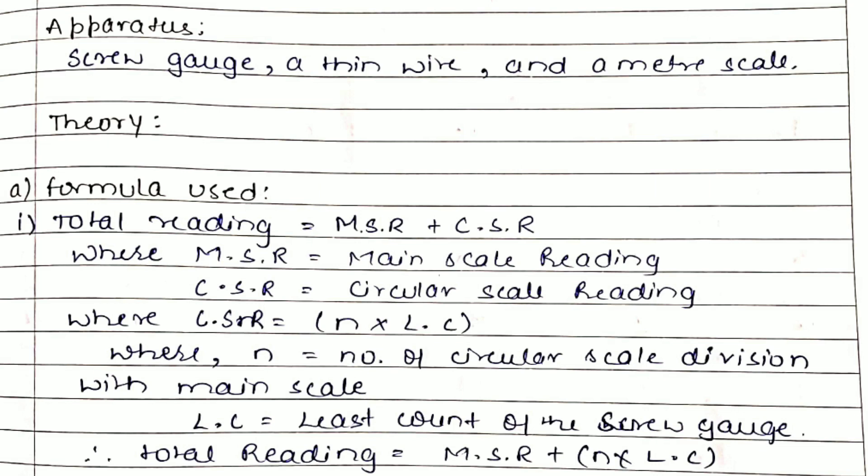In this experiment we use the following formulas. First, total reading equals main scale reading plus circular scale reading, where MSR and CSR respectively. CSR is n into LC, where LC is the least count of screw gauge or screw gauge constant, that is 0.001 centimeter.